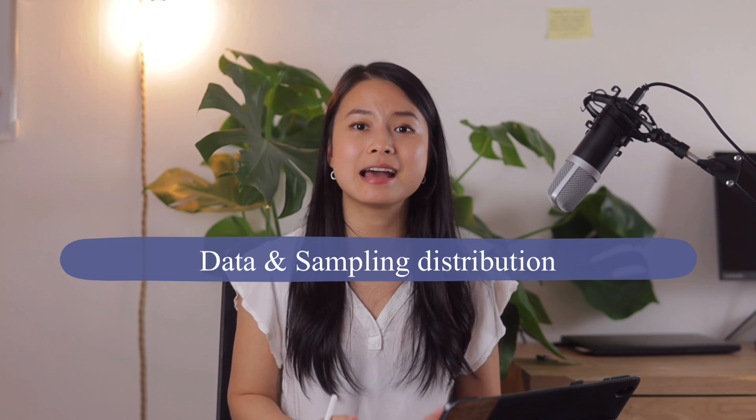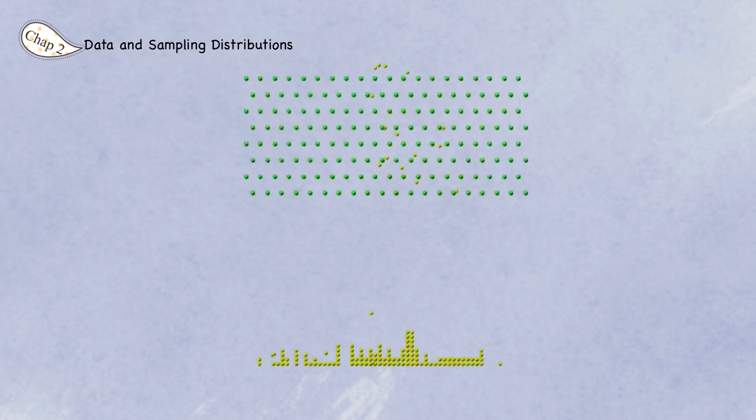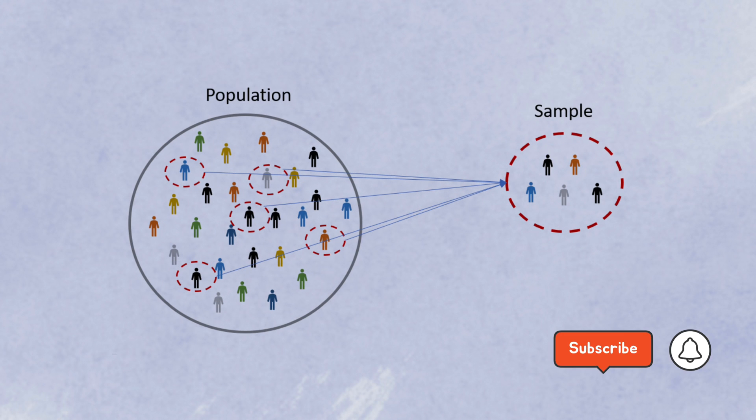Now let's move on to data and sampling distributions, which is the core of statistics. When you collect data, you are sampling from a population — except in the Internet of Things where everything is collected with a sensor, which is the case with big data today. A sample is simply a subset of data from a larger dataset or population. Even in big data projects, predictive models are typically developed and piloted with samples, and samples are also used in various kinds of tests such as pricing tests, web treatments, or A/B testing.